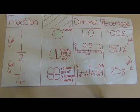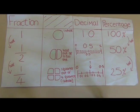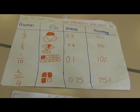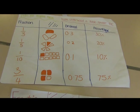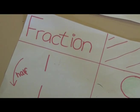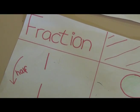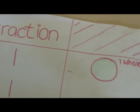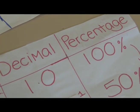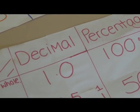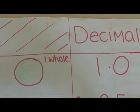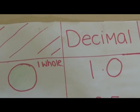We are doing about fractions, decimals and percentages. We will first explain how to work them out. One whole is equal to 100%. That is because it is a full one. The decimal is 1.0 because there are no units to go into it.